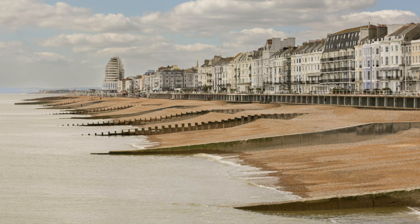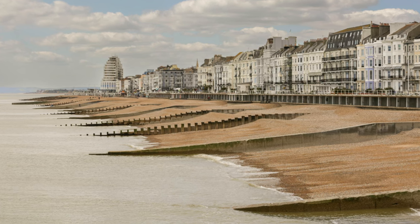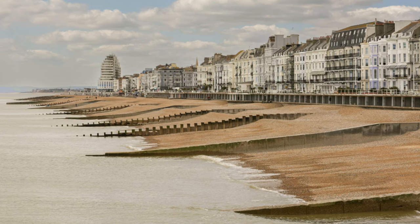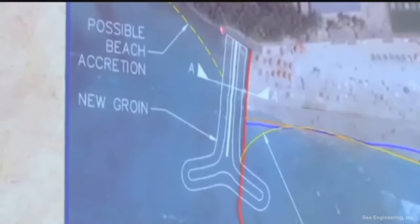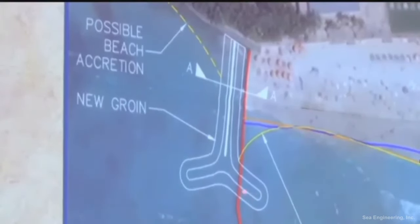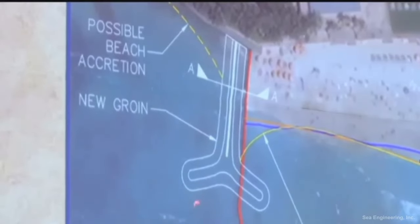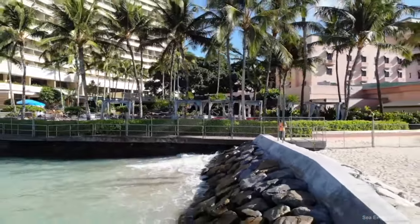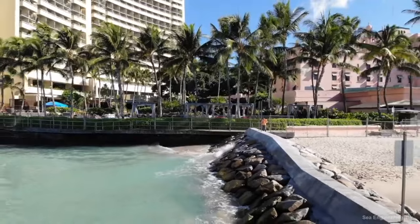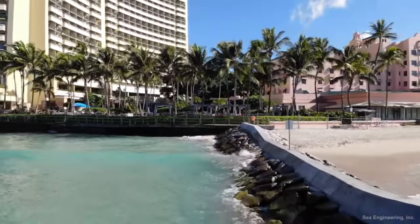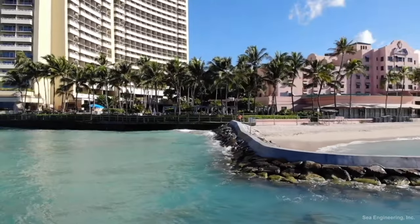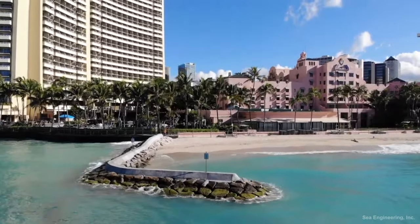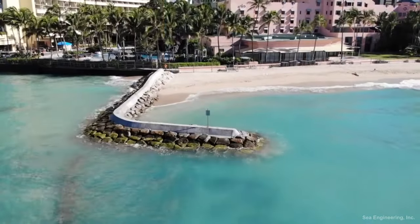Groins are structures built perpendicular to the shore, designed to interrupt water flow and trap sand. By doing so, they can prevent beach erosion and even help in beach widening. To construct groins, one begins with material selection, which would range from wood to concrete and large rocks. After determining the site's requirements — like the extent of erosion, tidal movements, and beach slope — the groin size and orientation are finalized. Installation often involves digging or drilling into the seabed to ensure stability. Once erected, sand naturally accumulates on the up-drift side, while potential erosion can occur on the down-drift side.